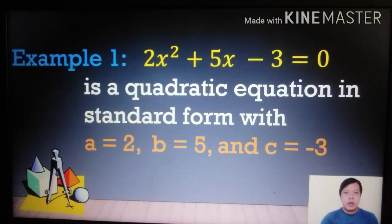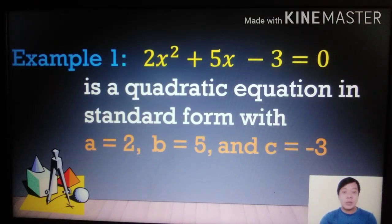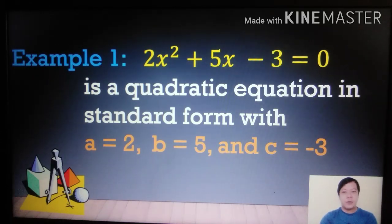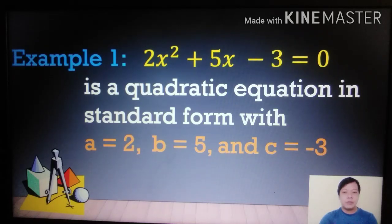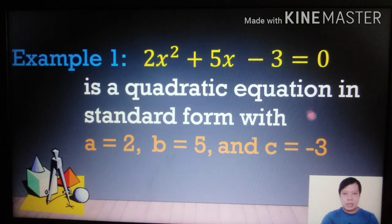Example 1: 2x² + 5x − 3 = 0 is a quadratic equation in standard form, with a = 2, b = 5, and c = −3.